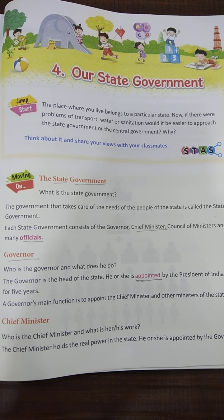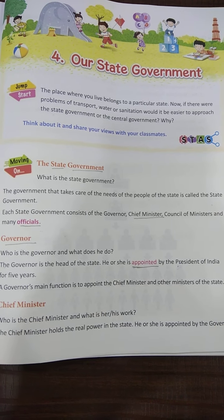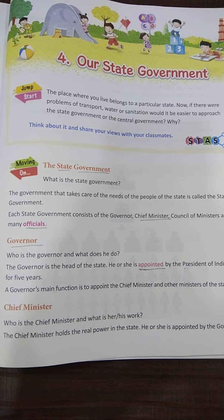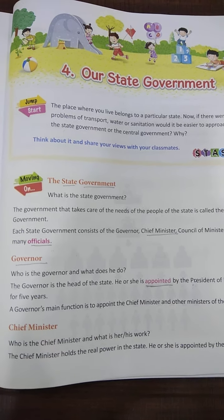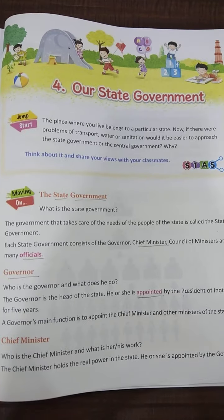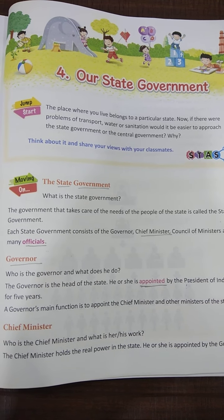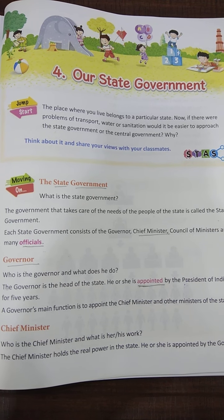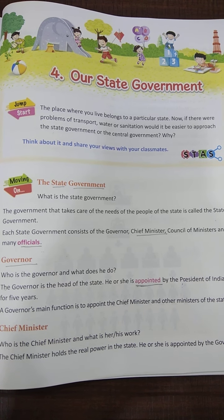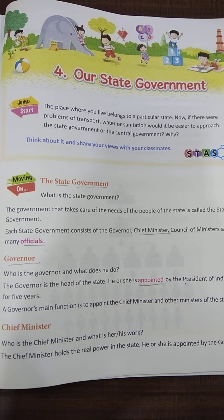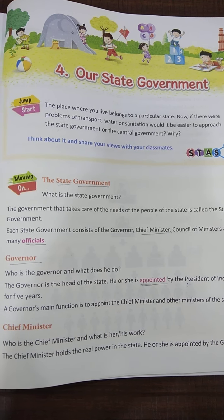A governor's main function is to appoint the chief minister and other ministers of the state. Do you know who is the governor of Maharashtra? The name of the governor of Maharashtra is Shri Bhagat S. Koshyari.